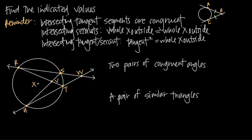We also know that when we have two intersecting secant lines, the product of the length of the secant line inside the circle and the length of the secant line outside the circle is going to be equal to the same product for the other secant line. For example, in circle X, RW is a secant line — a line that cuts through the circle at two points. RW cuts through the circle at point R and point S, and UW cuts through at point U and point T.